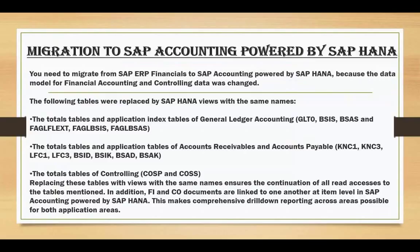The FI/CO documents are linked to one another at the item level. In SAP Accounting powered by HANA, when you post a transaction in customer data, whenever an invoice is generated and once a down payment or partial payment is updated, it is automatically reflected in the General Ledger as well. This makes comparison and drill-down reporting across application areas possible, and you need to concentrate on reporting tools.